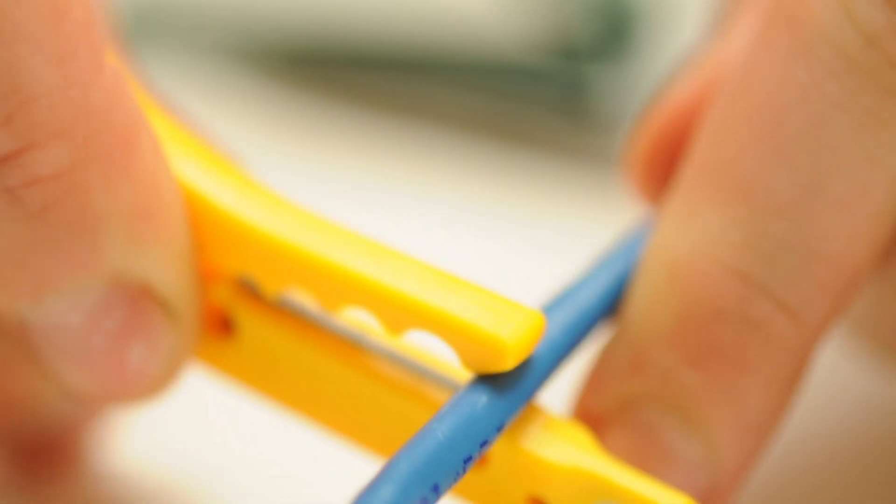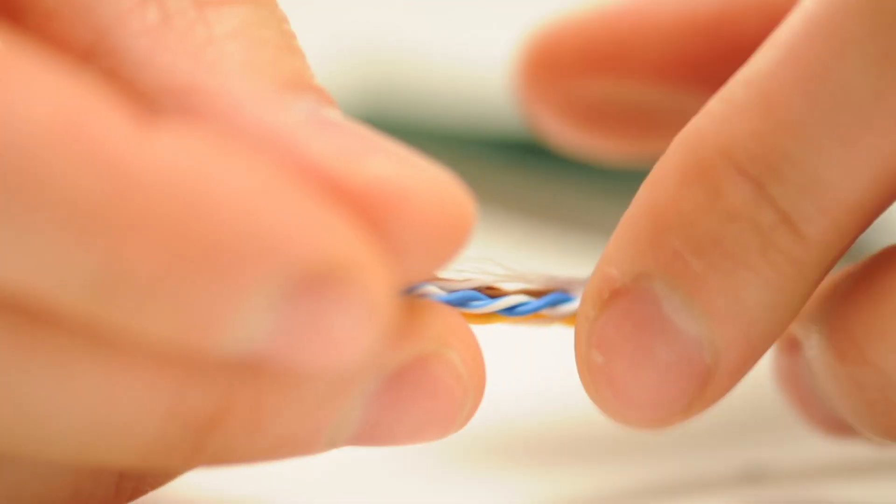Taking my cable stripper, I'm going to remove the jacket. I can simply rotate it and it'll pull right off. Then I'm going to remove the ripcord. You can use the ripcord to peel back the jacket, but we've already used a stripper.